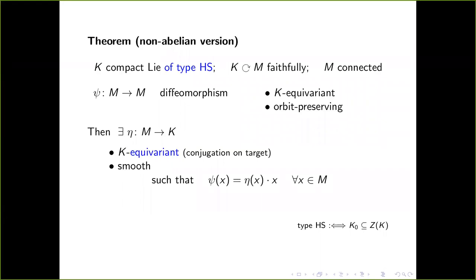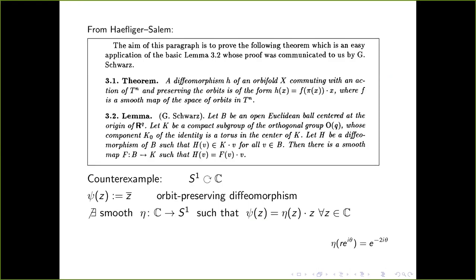Two years ago I met Gerald Schwartz and told him about this theorem of his in the Haefliger-Salem paper. As soon as I mentioned it — the first time I ever met him — his face dropped and he started mumbling something I couldn't quite understand. We had a whole week at that conference and talked. It turns out that in the Haefliger-Salem paper, the lemma they attribute to Schwartz is actually wrong. There was some misunderstanding in communications: once the paper was out, Schwartz knew right away something had gone wrong.